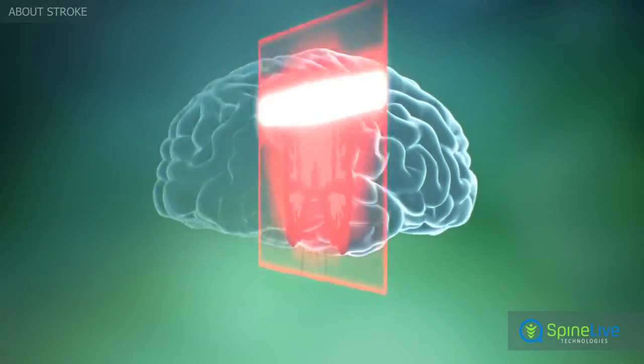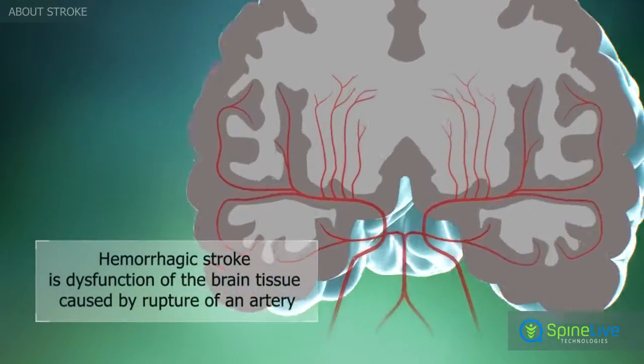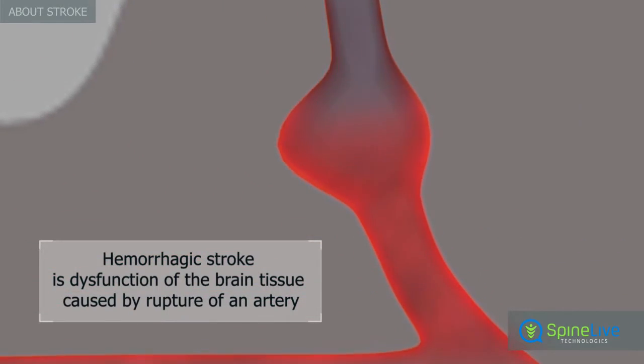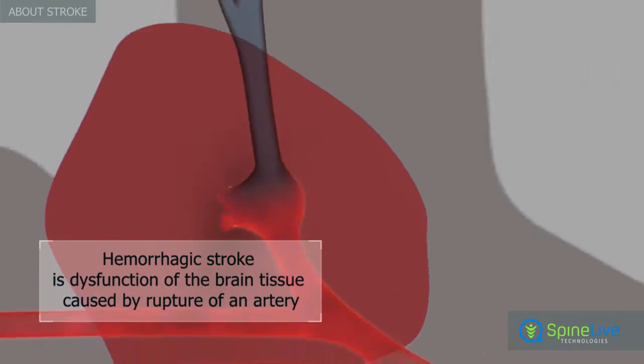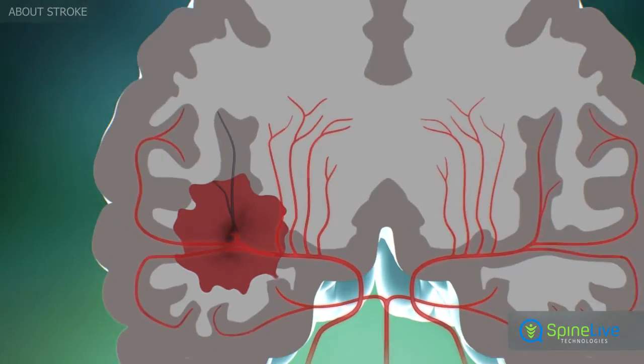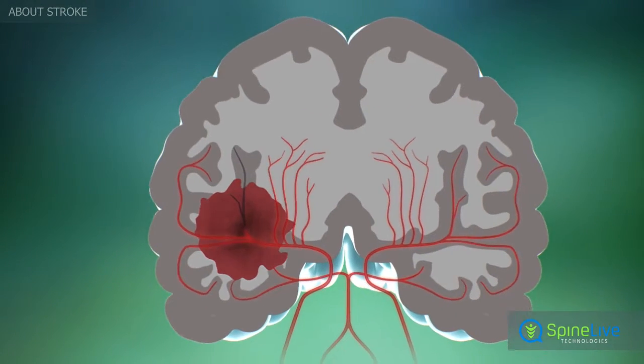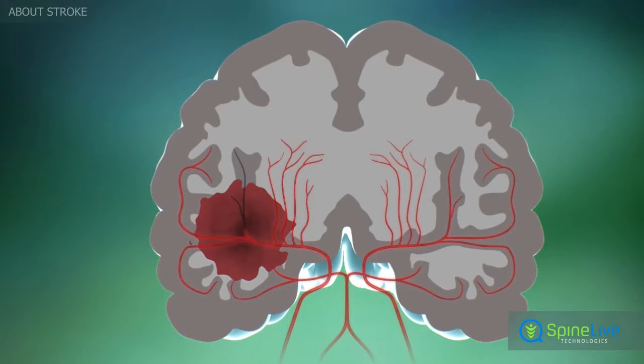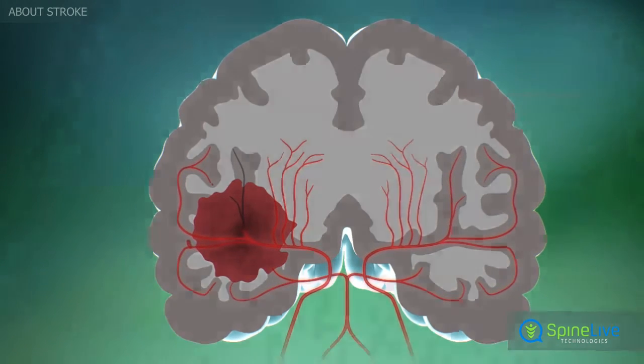Hemorrhagic stroke is dysfunction of the brain tissue that occurs due to a rupture of blood vessels and the accumulation of blood in the brain tissues.